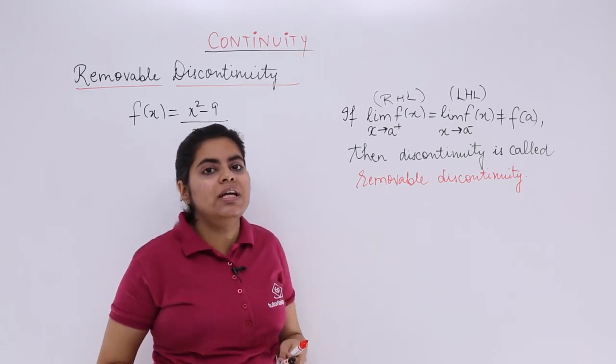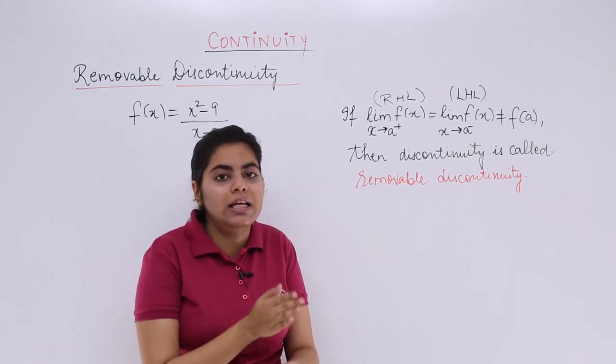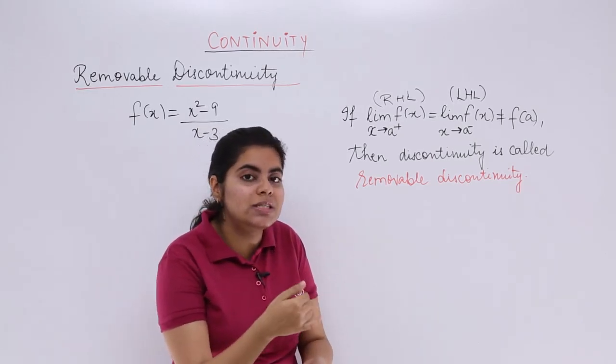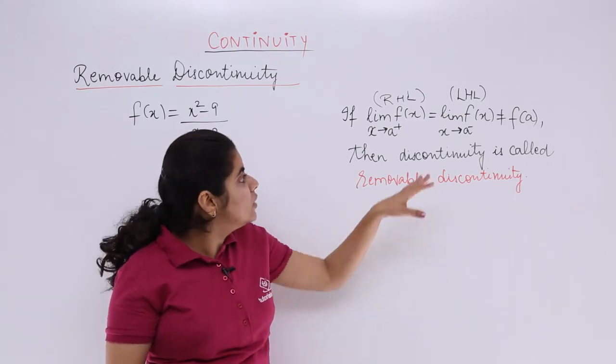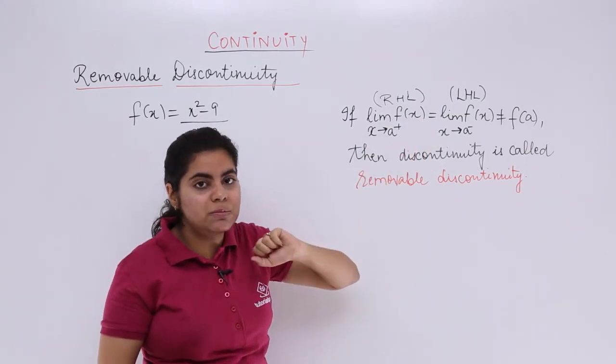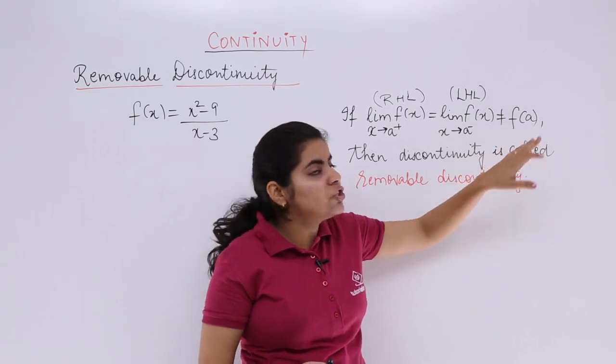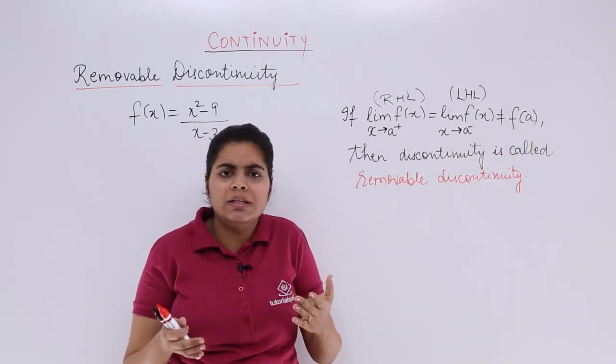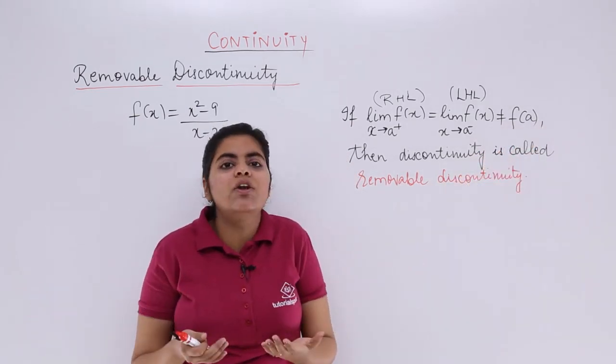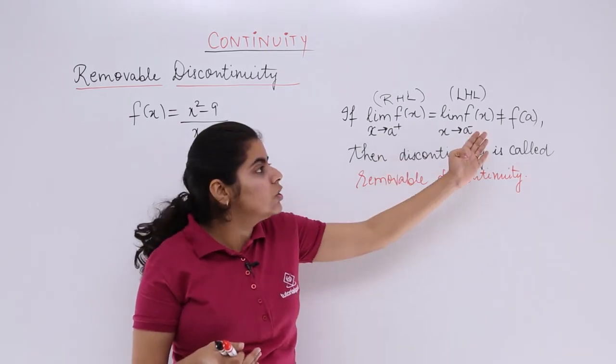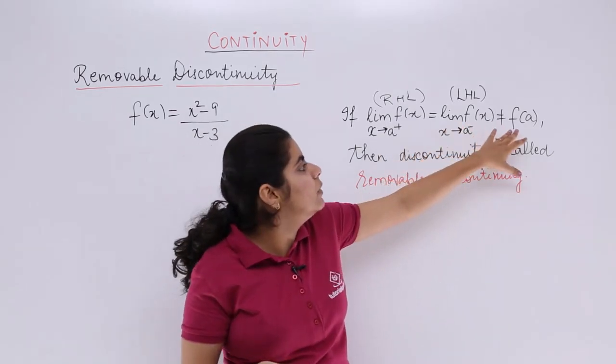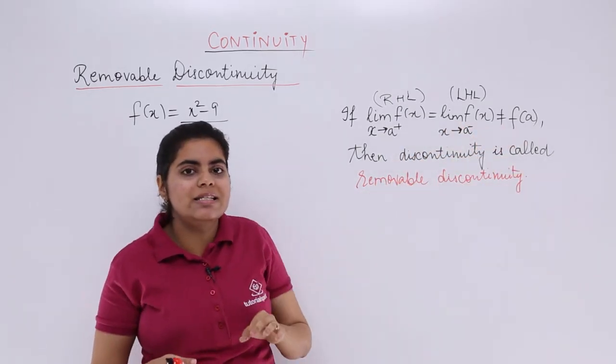And we said that all these 3 have to be necessarily satisfied so as to see that it is continuous. But here what is happening is the first condition is being satisfied, the second condition that yes, function value is existing, but the third is not being satisfied. These both are not equal. The 3 conditions are not being equal. These are equal, that is not equal. That is why it is discontinuous.